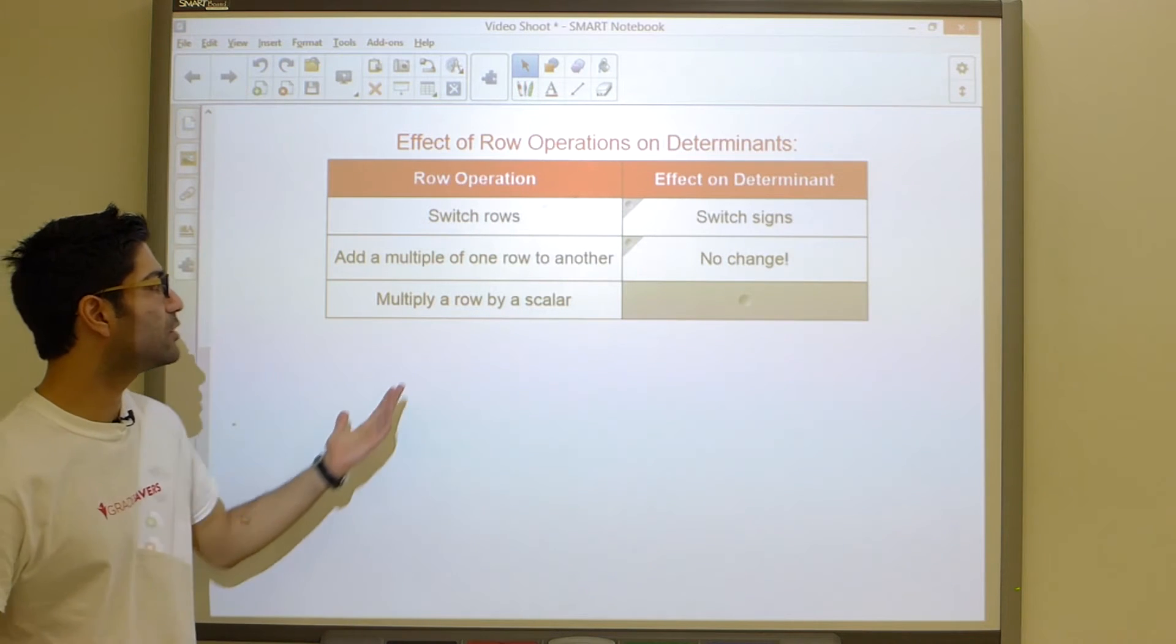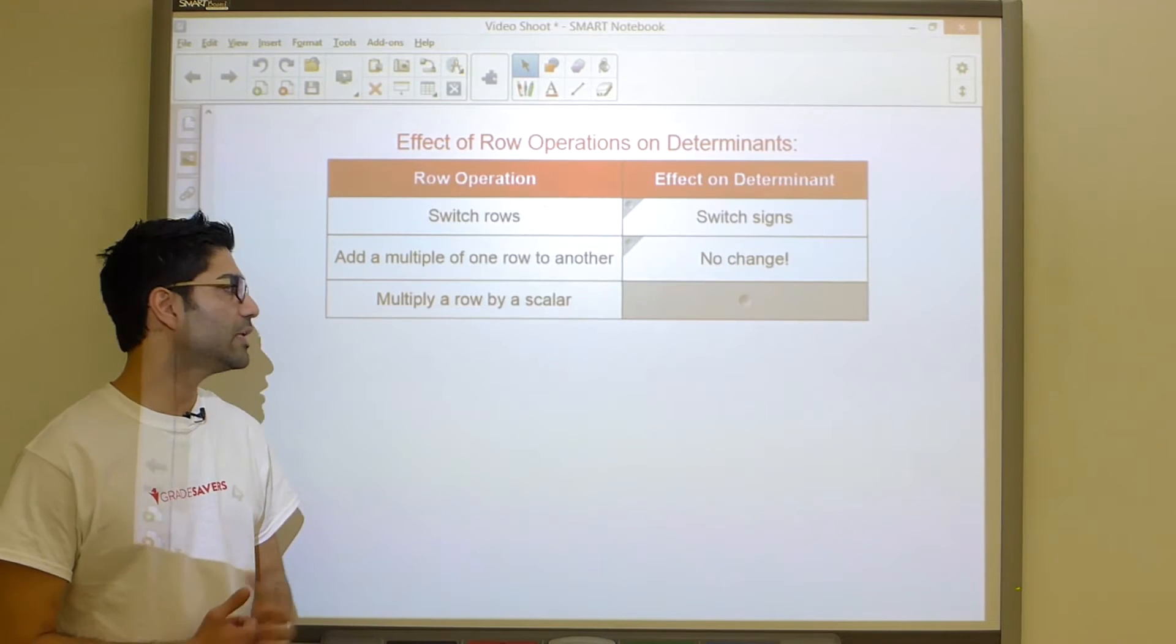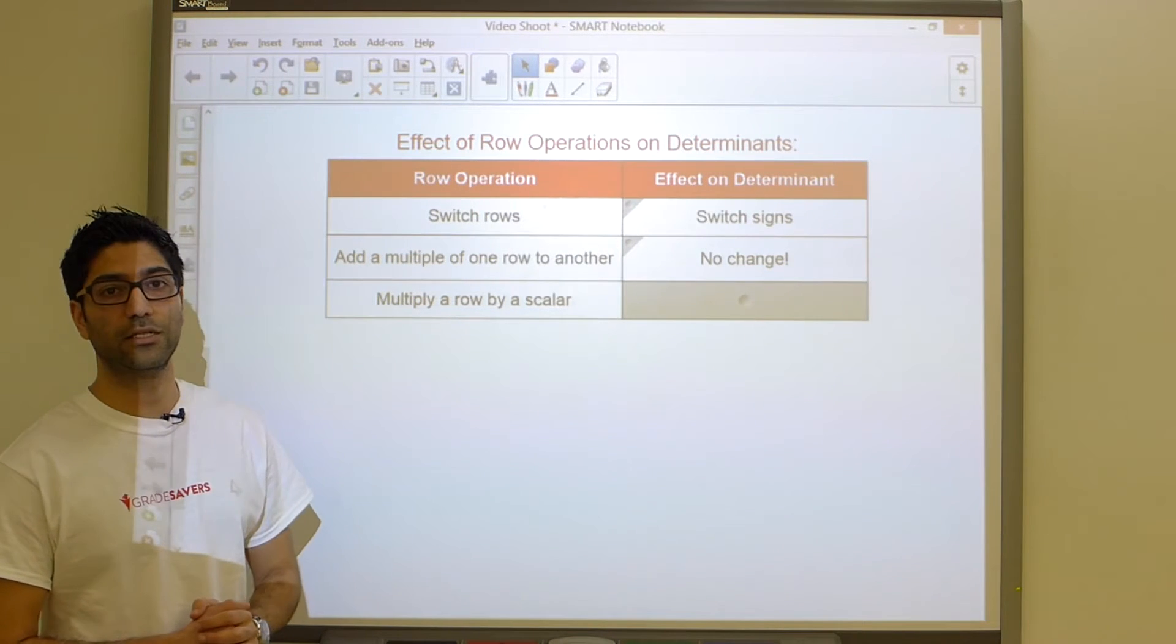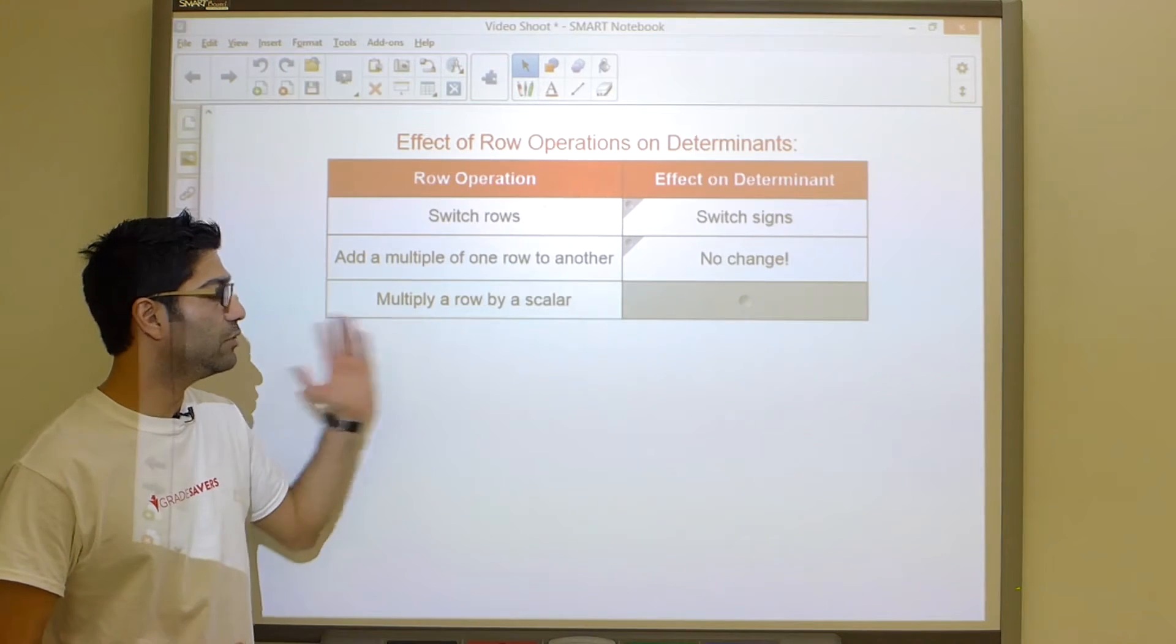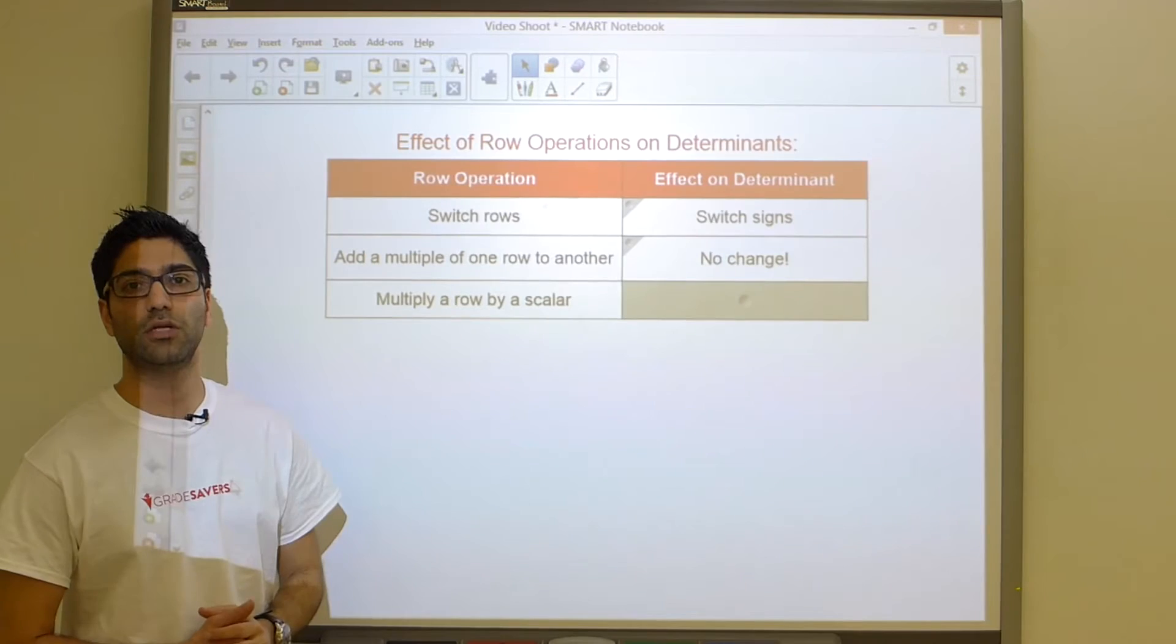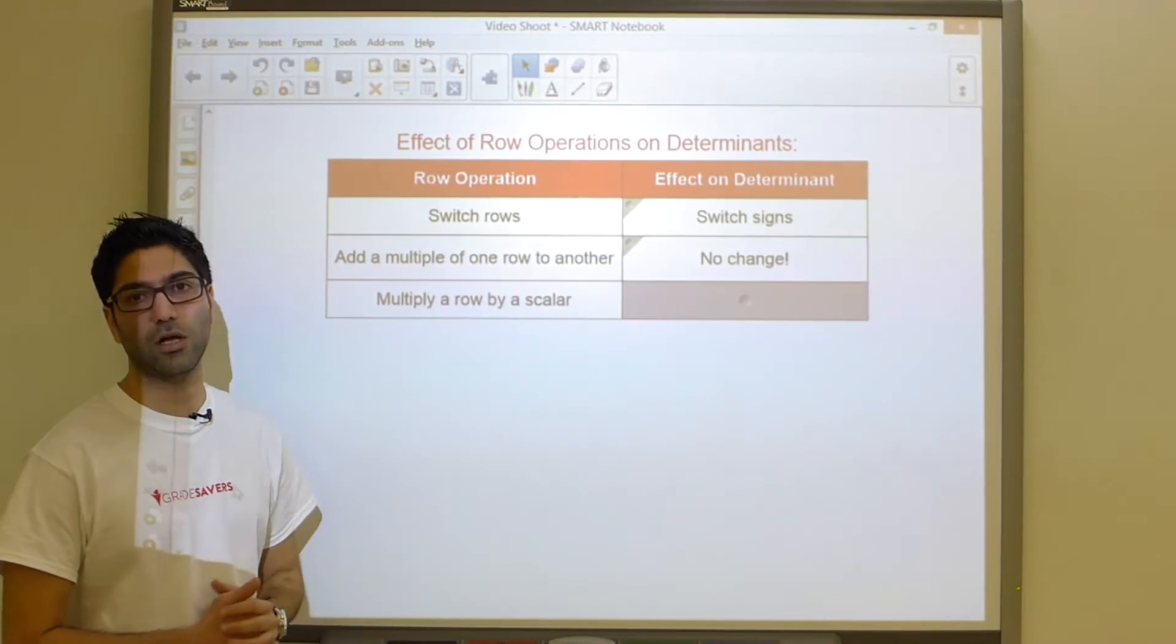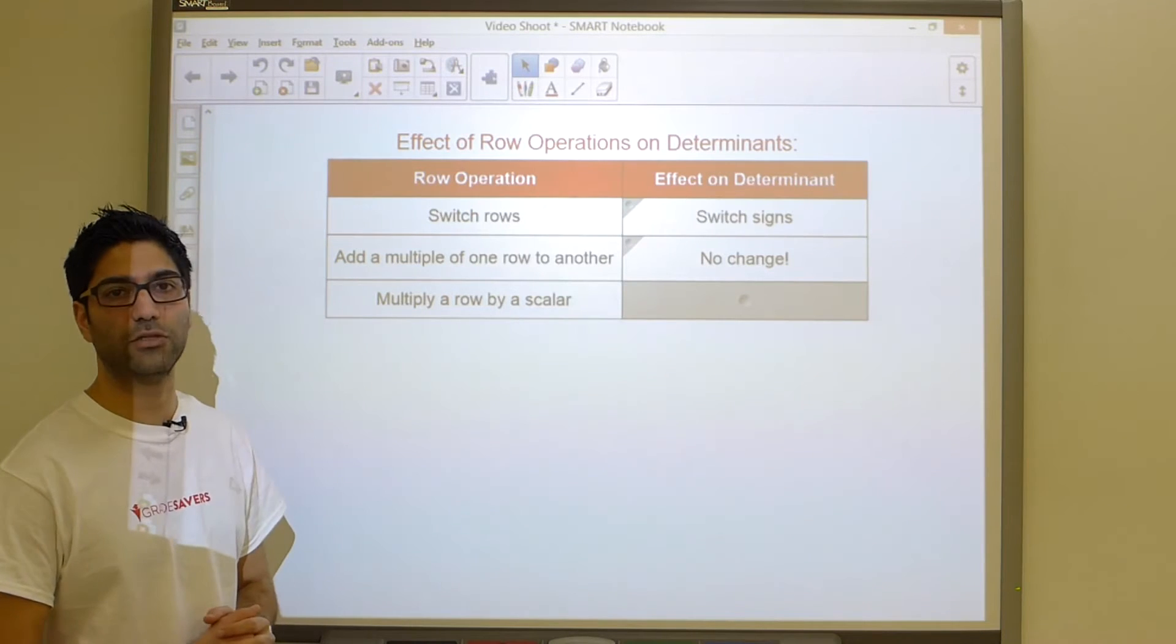Lastly, if it turns out that you either multiply or divide a row by a scalar, well then you have to multiply or divide the determinant by the same scalar. So if you have a matrix and you have manipulated the matrix by multiplying by 2, it turns out that the original determinant will also get multiplied by 2. So at the end, you'll have to divide by 2 to get the correct answer.